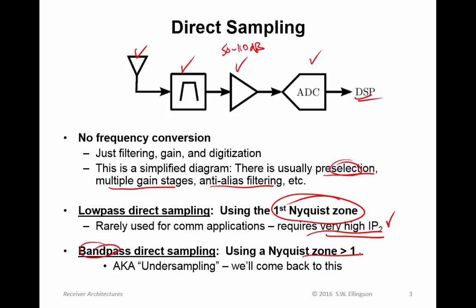A more common architecture these days is bandpass direct sampling, where we use a Nyquist zone greater than one — for example, the second Nyquist zone. This has the advantage that signals in the second Nyquist zone alias to distant Nyquist zones, so the second-order linearity requirement is much less. By the way, this technique is also known as under-sampling, which I talked about in a previous lecture.